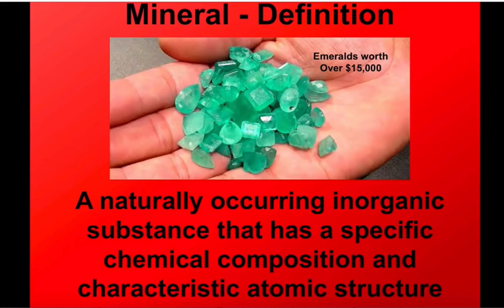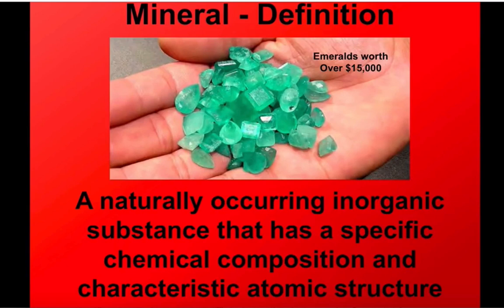The definition of a mineral has three key points. It's an inorganic, natural material — materials like coal, for example, don't count as minerals. It must have a specific chemical composition; we define minerals by their chemistry. And finally, it needs a characteristic atomic structure. Those elements that make up the mineral need to be put together in a very specific way. Minerals that differ in either their chemical composition or their atomic structure will be different minerals — they'll have a different name, different classification.